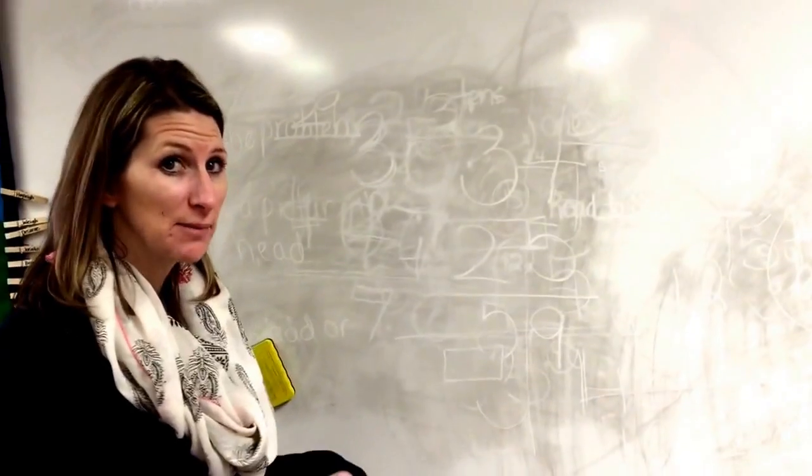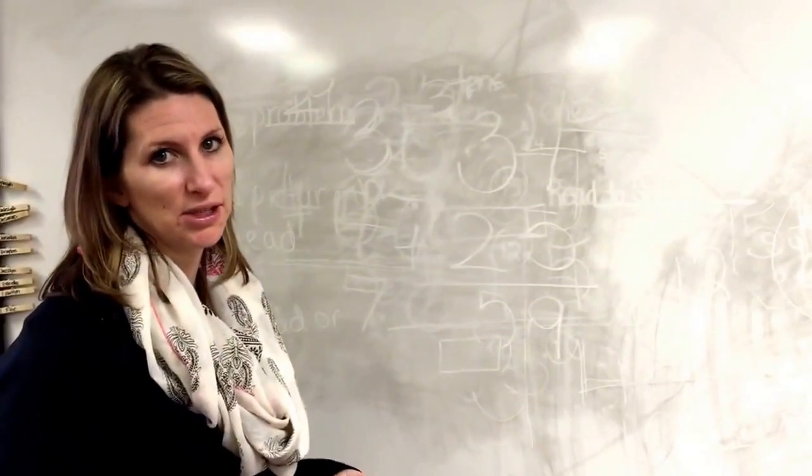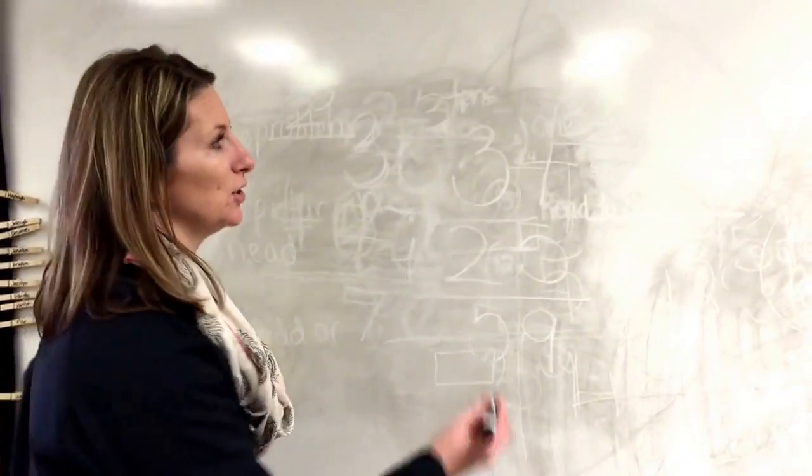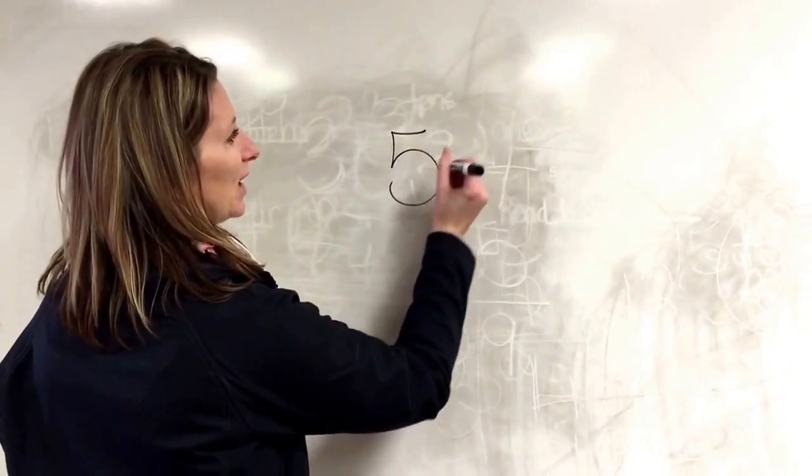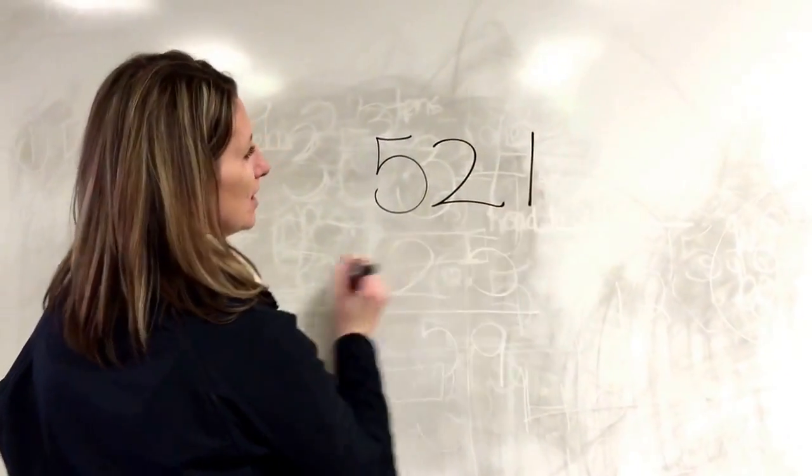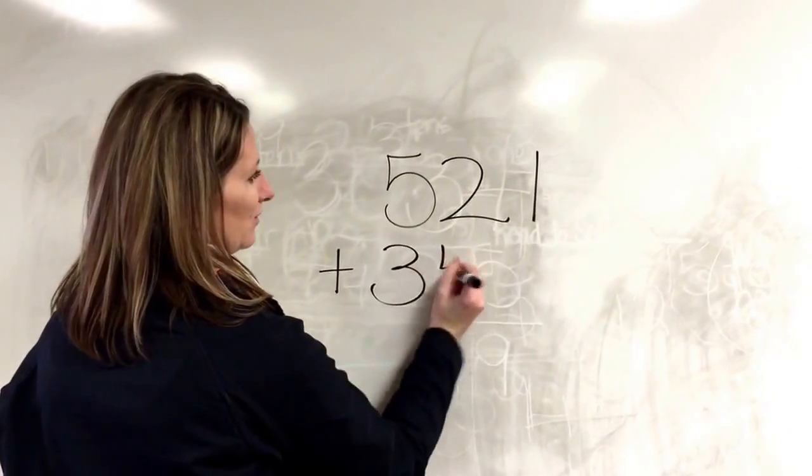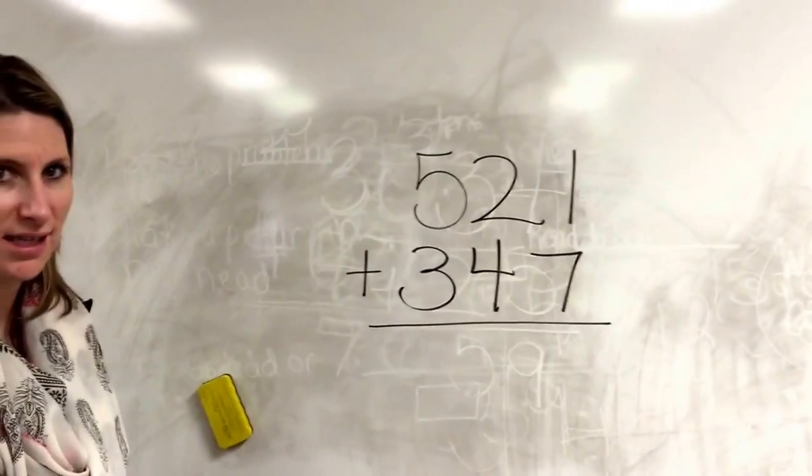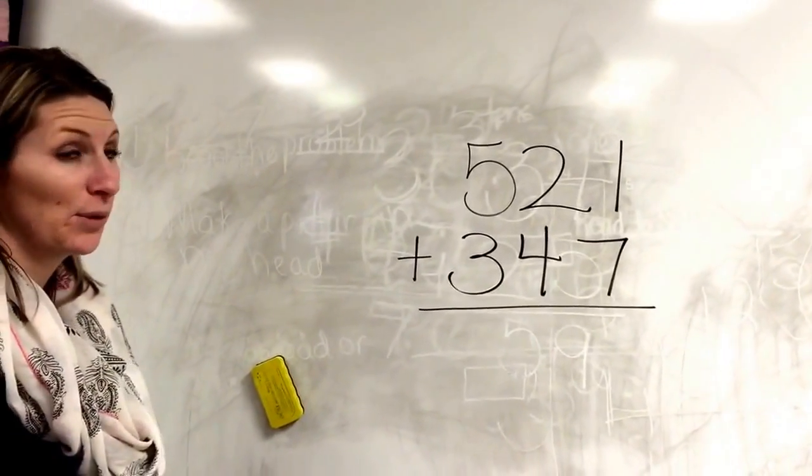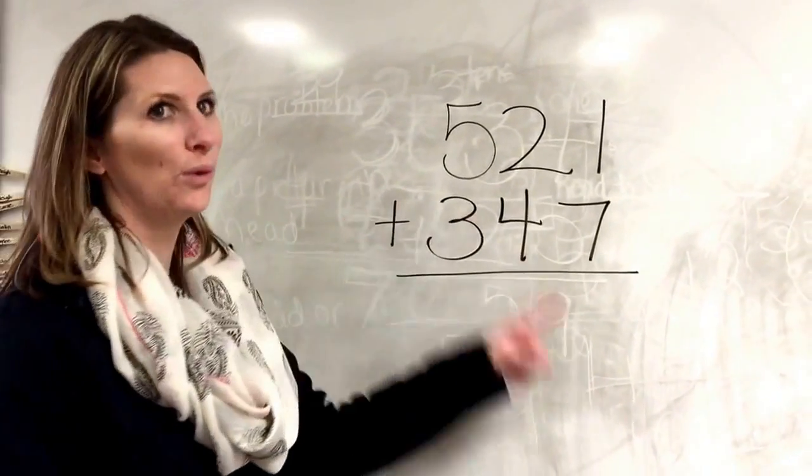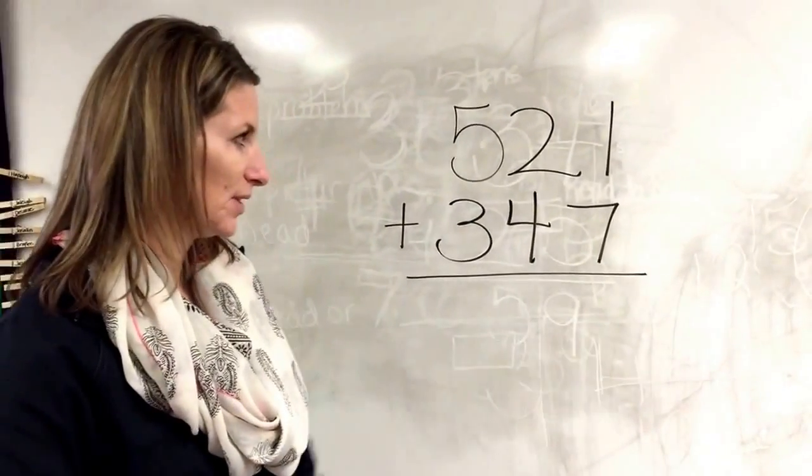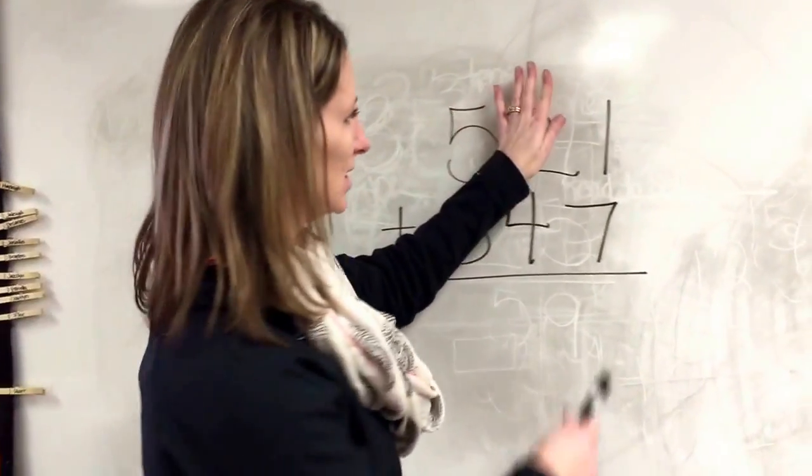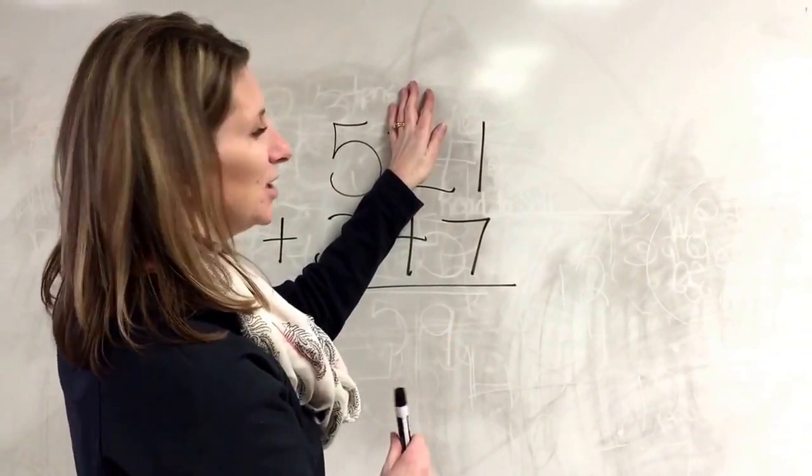Okay, so sometimes you might see a number that's bigger than two digits plus two digits. You might see a number like 521 plus 347. Looks pretty hard, doesn't it? But it's not, if we remember that we always have to add the ones column first. So I'm just gonna look at these numbers, one and seven. I know